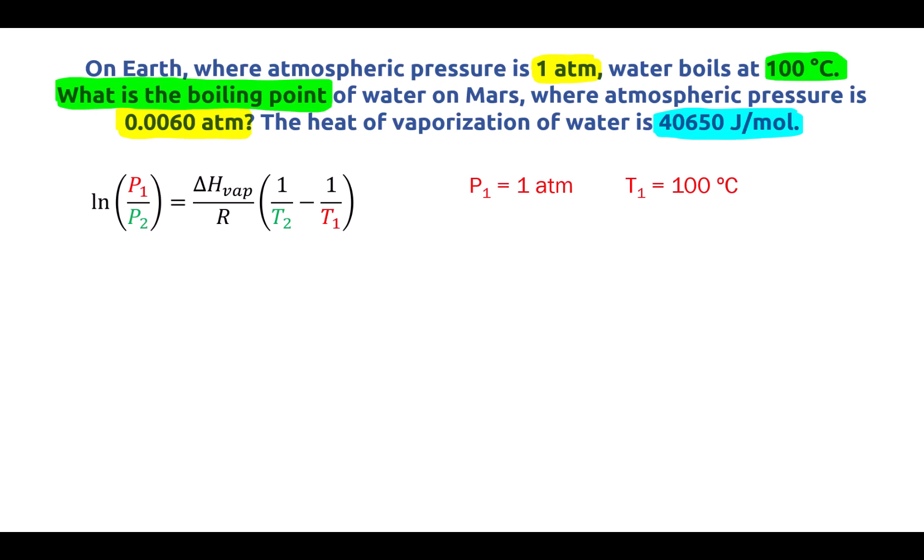Our temperatures need to be in Kelvin, as they usually do for most equations we solve. So I'm gonna add 273.15 to my 100 degrees Celsius, and that's going to give me my temperature in Kelvin of 373.15 Kelvin. That means P2 has to be 0.0060 atmospheres with its corresponding temperature as the unknown. That is our question mark for this question.